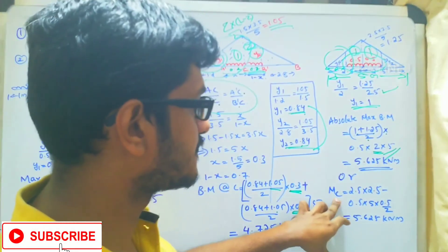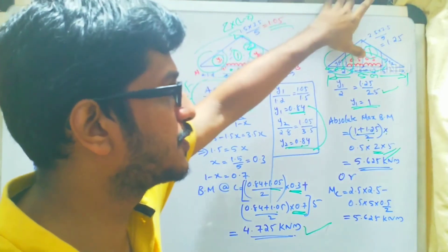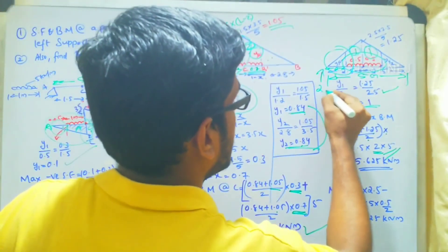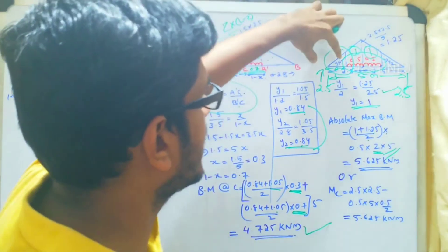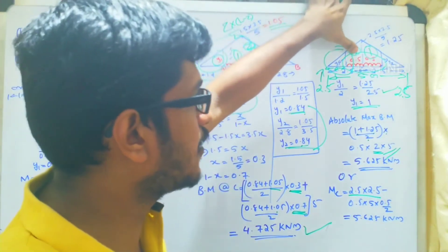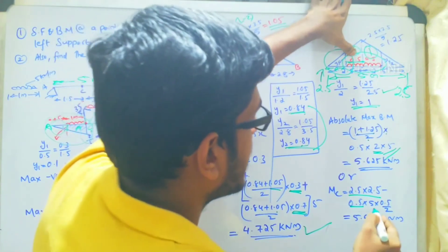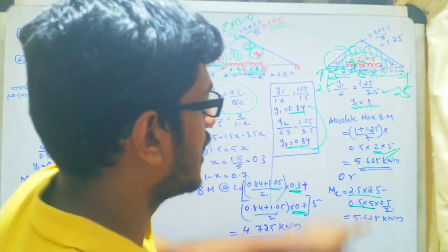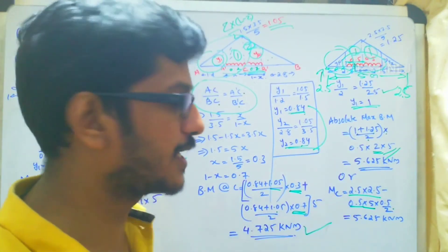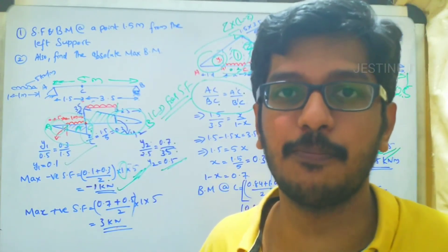This can also be verified using reactions: the UDL magnitude is 5 kilo Newton per meter over 1 meter span, giving total load 5 kN, so RA = RB = 2.5 kN each. Bending moment at mid-span: 2.5 × 2.5 (reaction × distance) minus 5 × 0.5 × 0.5/2 (UDL contribution) gives 6.25 minus 0.625 = 5.625 kilo Newton meter. Both methods confirm the absolute maximum bending moment is 5.625 kilo Newton meter.